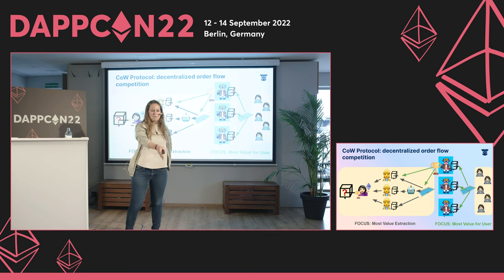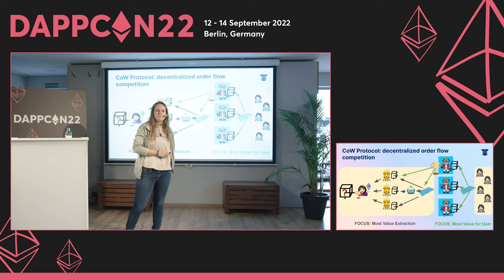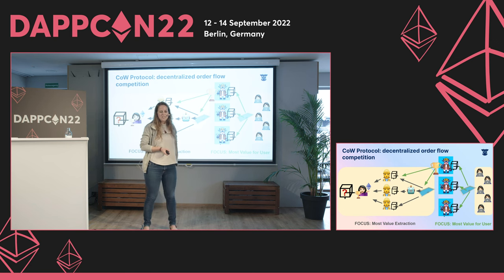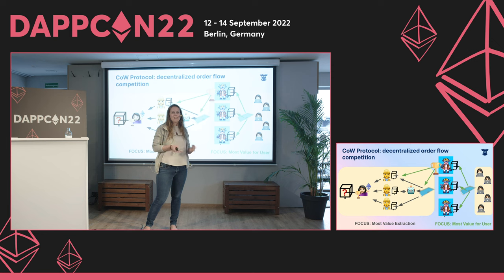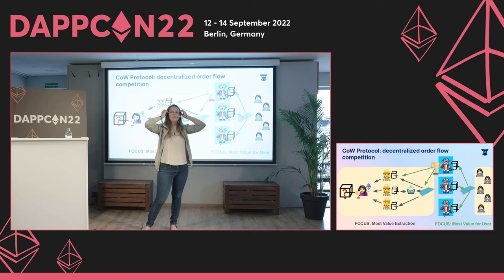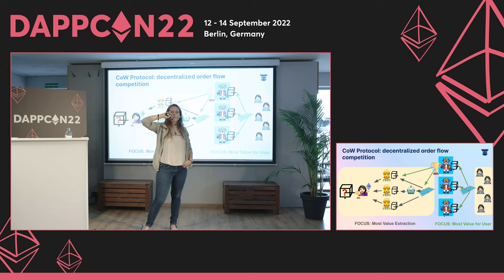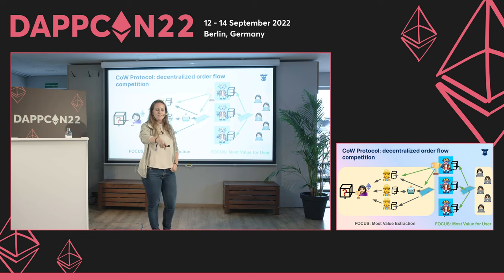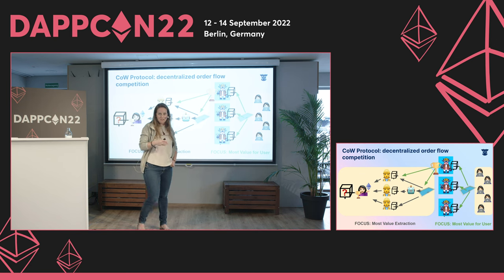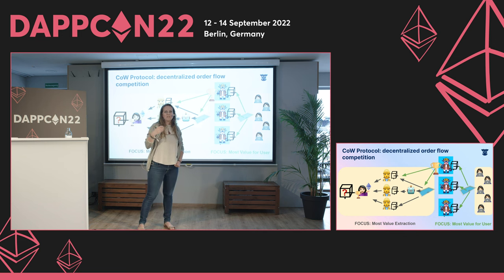The CoW batch builders submit their execution route along with the surplus they can generate for specific orders. A competition compares which builder finds the overall maximal surplus for users, and that one is picked. Then the winner of the batch competition is responsible for submitting the transactions on-chain to the validators.